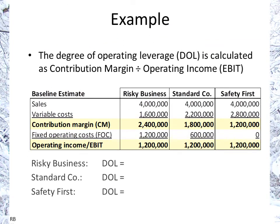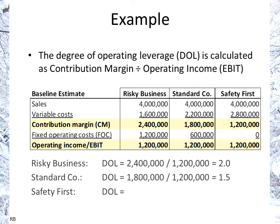The degree of operating leverage is the contribution margin divided by the operating income. For Risky Business, that's $2.4M over $1.2M, which equals 2. For Standard Co, you get 1.5. And for Safety First, you get 1.